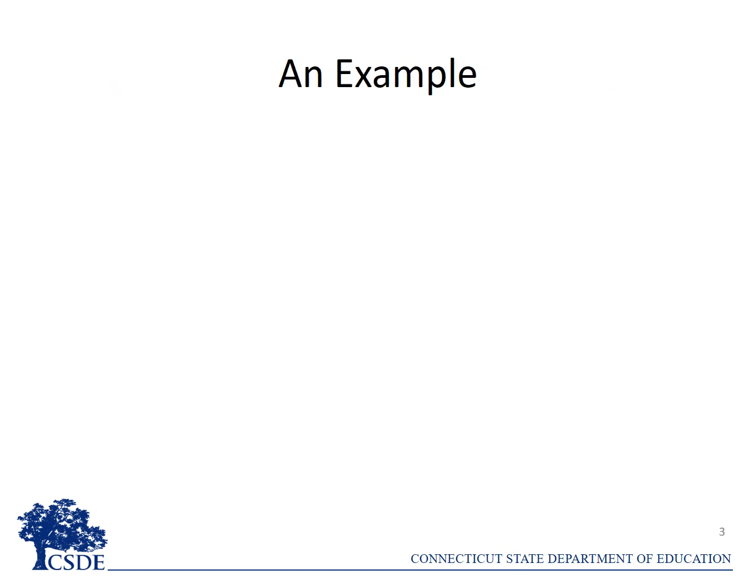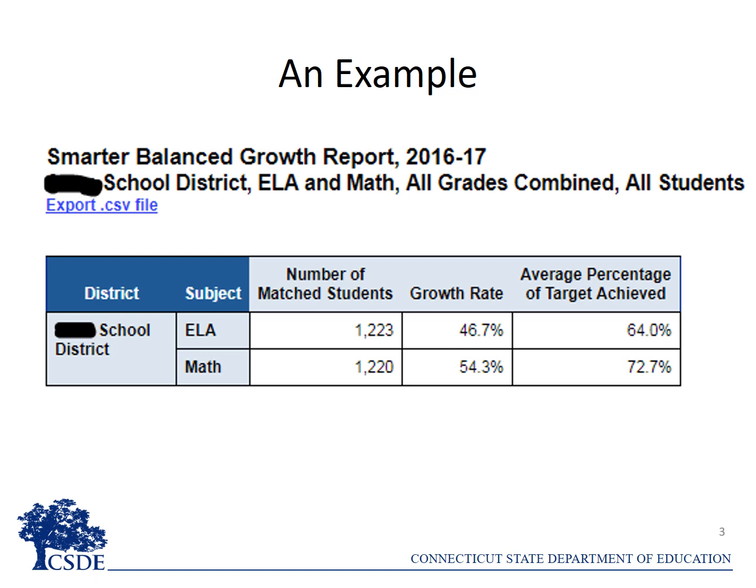Let's look at the growth results for a Connecticut district to better understand these two metrics. Starting with the growth rate — the percentage of students who met or exceeded their respective growth targets — in this example, of the 1,223 matched students in ELA, 46.7 percent or 571 students met or exceeded their growth targets. Conversely, the remaining 53.3 percent or 652 students did not meet their individual growth targets. They may have made some growth on the vertical scale, but they did not grow as much as their target required.